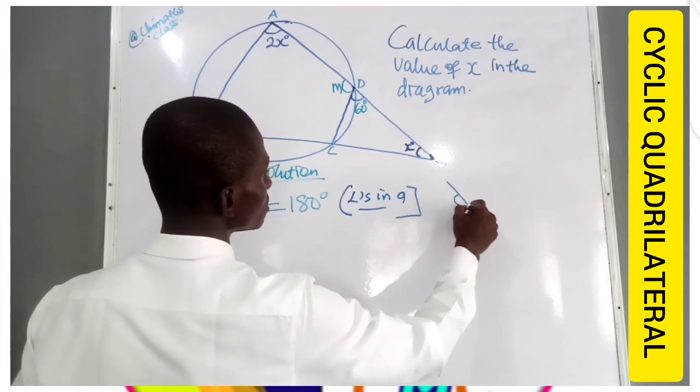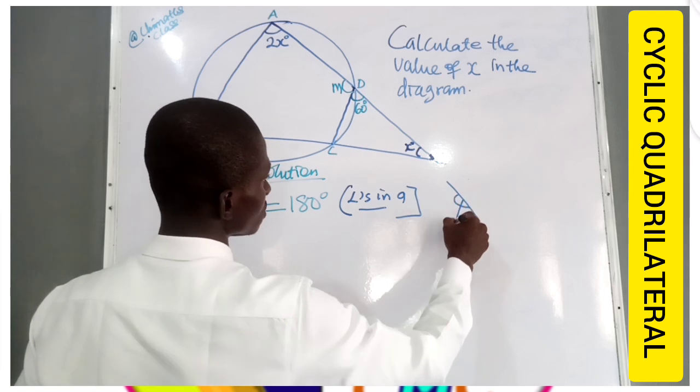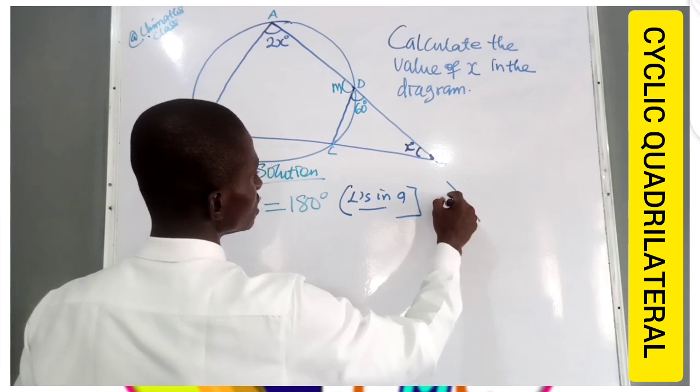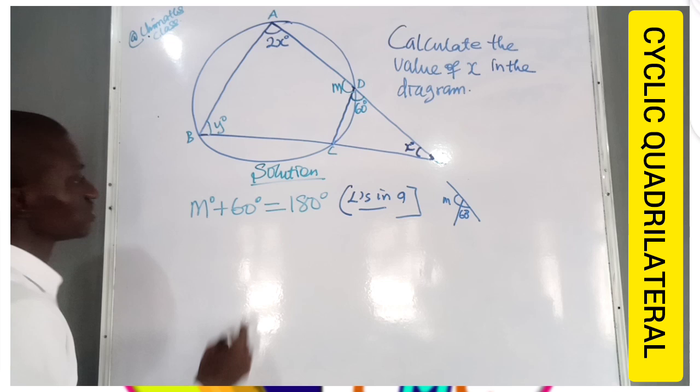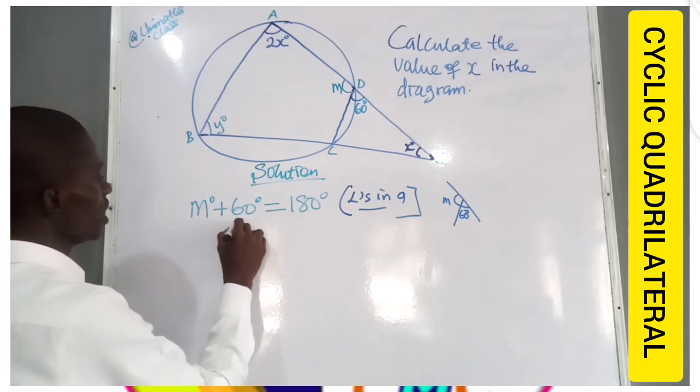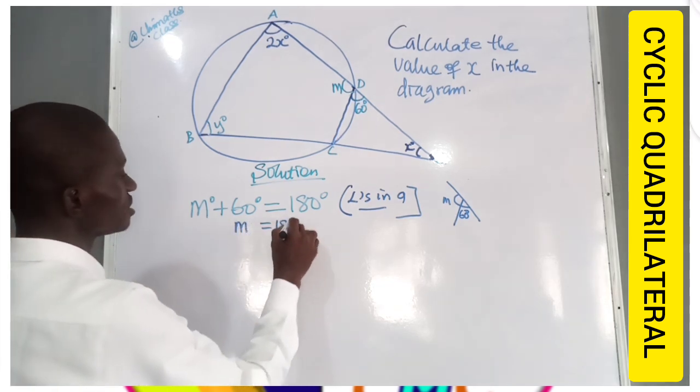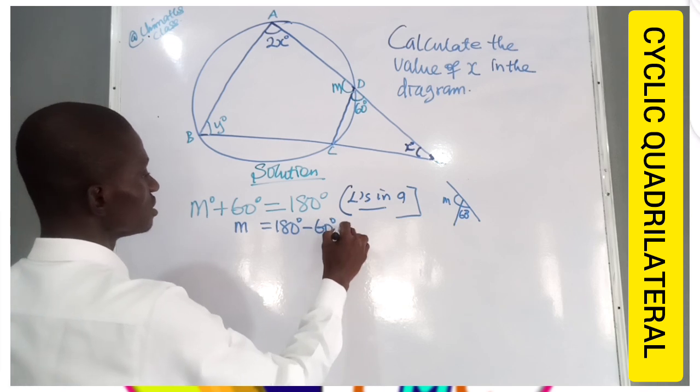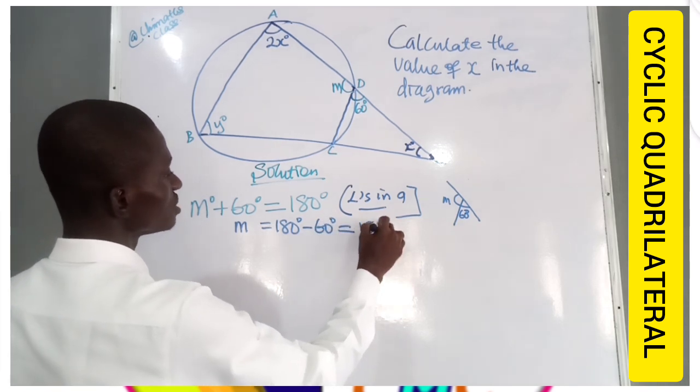You should observe, you see something like this. So here is 60, and this is our M. Angles in a straight line will give us 180. So M will be 180 degrees minus 60 degrees, which is 120 degrees.